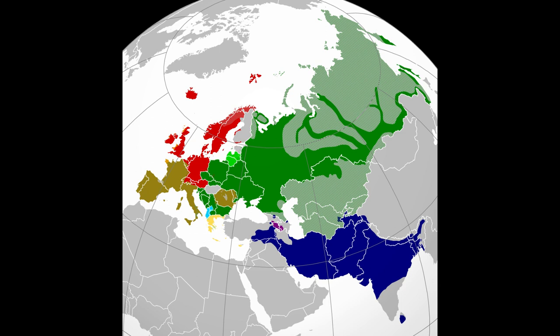Even hunter-gatherer societies such as the Khoisan people have a language which is able to run their societies — they are able to understand each other and communicate with each other. So why did we Europeans develop all these different languages just not to understand each other? This doesn't make any sense.